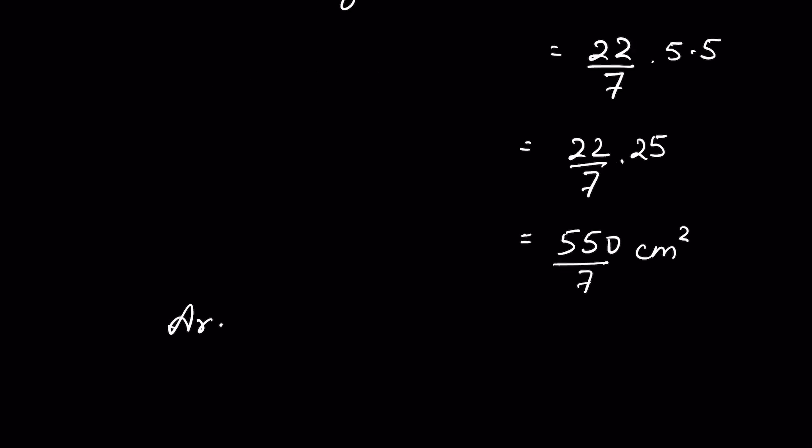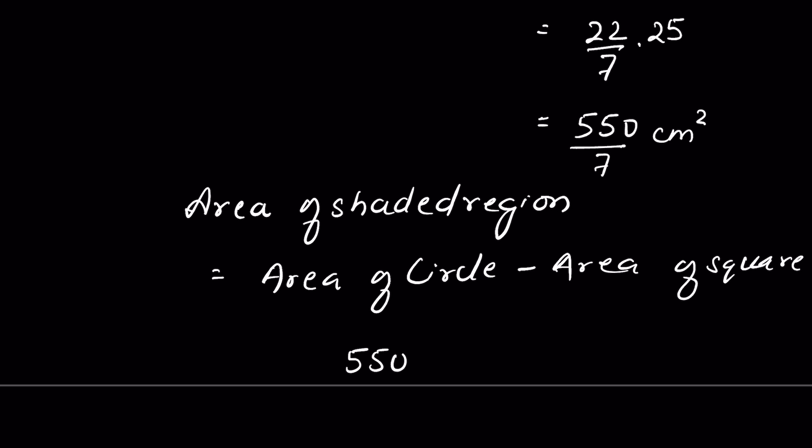So area of shaded region will be area of circle minus area of square. So 550 upon 7 minus 50.